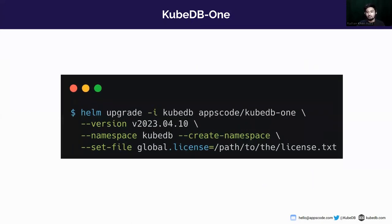This is the command you can use. If you don't find this chart, you can add the repo onto your cluster. Using the chart, you can deploy or install KUBEDB and Stash all together in any namespace, and you can use a single license file. For the license file, you can visit appscore.com where you will find our license server, and from there you can get the license to install this chart.